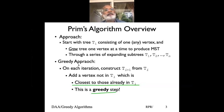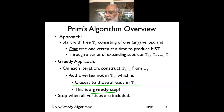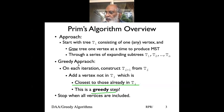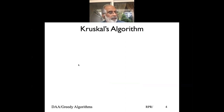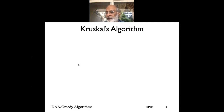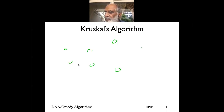In Kruskal's algorithm, it is a different approach. Rather than taking one node at a time, you start looking at the edges. That means we start with basically a forest. Given n nodes — node 1, node 2, node 3, node 4, node 5, node 6 and so on — we have a different number of edges.